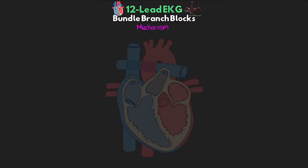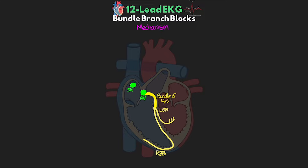Conduction typically starts with our SA node and is transmitted to the AV node, which after its delay conducts the signal down the bundle of His and then to the right and left bundle branches. The left bundle branch quickly branches into the left posterior fascicle and left anterior fascicle. These bundle branches are where we're having our problem — they become blocked and can no longer conduct the electrical signal appropriately, often due to underlying heart disease or myocardial infarction.